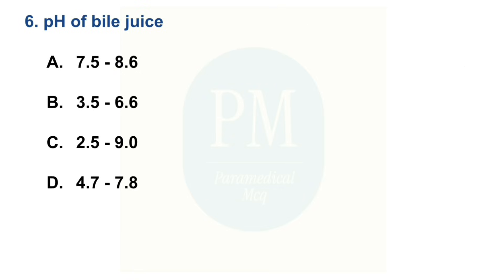pH of bile juice: Option A: 7.5 to 8.6. Option B: 3.5 to 6.6. Option C: 2.5 to 9.0. Option D: 4.7 to 7.8. The correct option is Option A — 7.5 to 8.6.